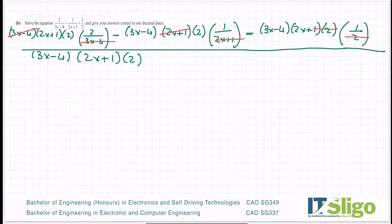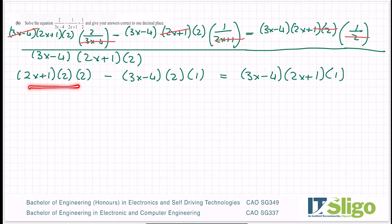And when you do it this method, you can drop the bottom line at this stage and just write down what's left on the top. Times 2 times 1 equals 3x minus 4 times 2x plus 1 times the 1. And in each of them you can see we have three terms to multiply by each other. We do two at a time and then multiply the answer by the third. And it doesn't matter the order you do the multiplying in.